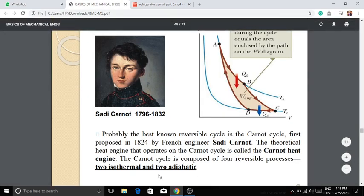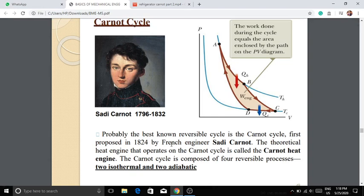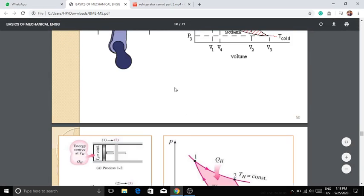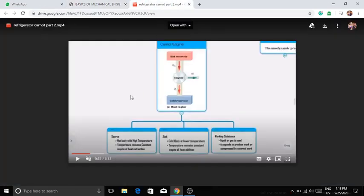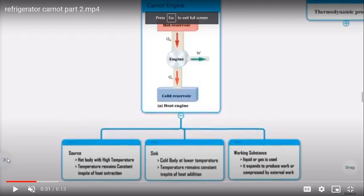The Carnot cycle consists of two isothermal processes and two adiabatic processes. The isothermal process occurs at constant temperature, and the adiabatic process occurs at constant entropy. We refer to the input as input power and the output as output power.